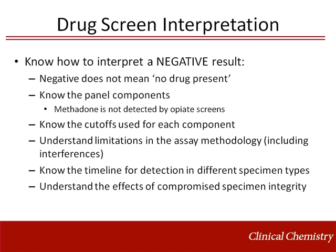A negative result does not mean no drug is present. A common mistake in interpreting negative drug screens is to be unaware of the panel components or cutoffs of the assay used. For example, it is often assumed that methadone, an opioid, is detected by opiate screens. In reality, methadone has no cross-reactivity and will not be detected by a drug screen for opiates. It is important to understand the limitations and interferences associated with the assay and methodology. Information about detection window or effects of specimen integrity on results will help aid in interpretation.